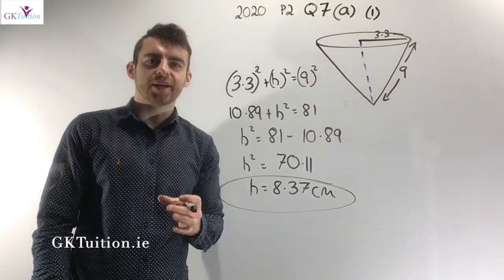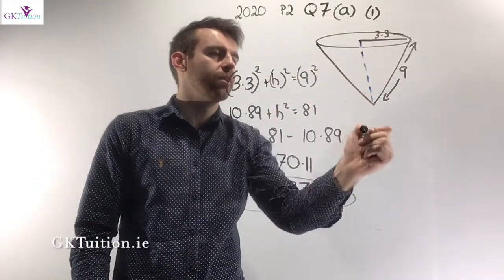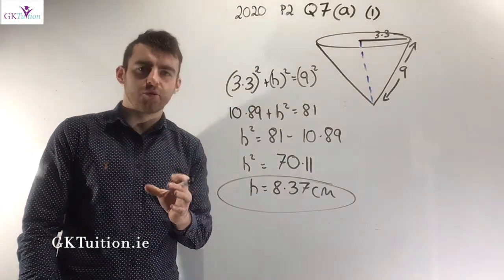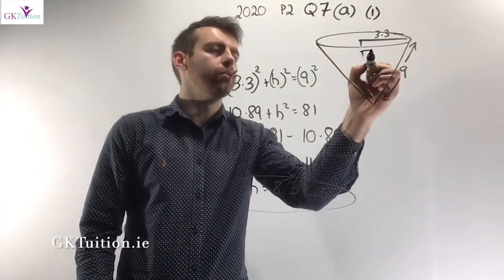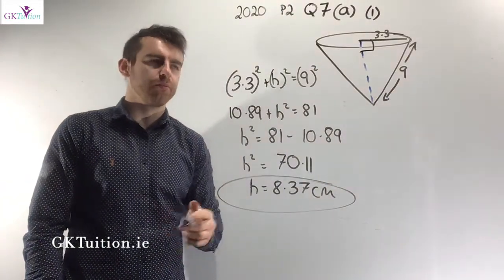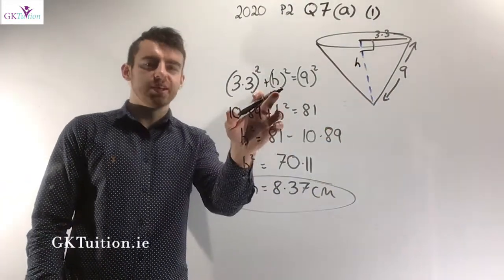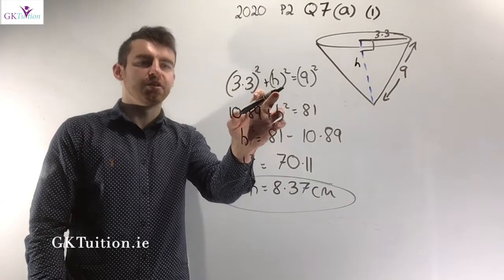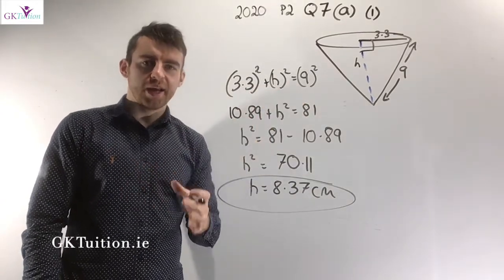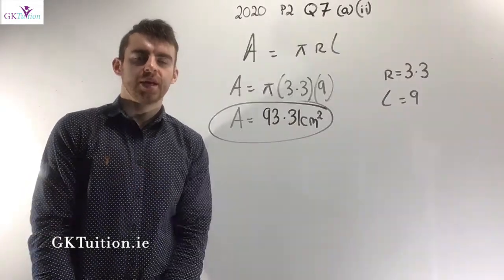You have to recognise that the three measurements — the radius, the vertical height and the slant height — are in the form of a right-angle triangle. So if you know two of them, you simply use Pythagoras' theorem to find the third. Subbing H into Pythagoras' theorem along with 3.3 and 9, H works out to 8.37 centimetres to two decimal places.